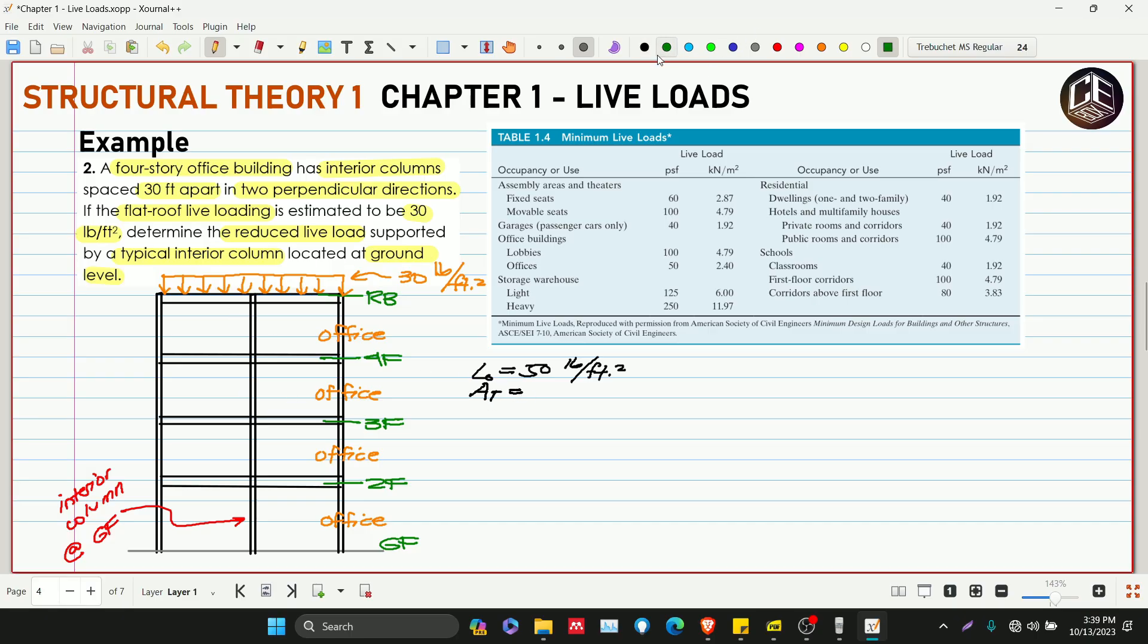Let's get the tributary area. We have 30 feet by 30 feet, so the tributary area is half of that. This is 15 feet and 15 feet—15 feet in this direction, then in the perpendicular or transverse direction, also 15 plus 15. So 30 by 30 feet. When we say two perpendicular directions, this is our X and Y plane. This is Y, this is X—they're perpendicular to each other. 30 feet in the Y, 30 feet in the X axis.